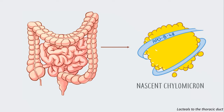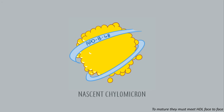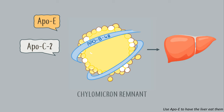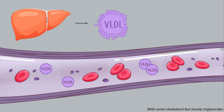Nascent chylomicrons leave the gut, lacteals to the thoracic duct. With MTP and ApoB48, to mature they must meet HDL face to face. HDL lends them some useful receptors. ApoC2 activating the lipase. The remnants depleted, their journey completed. Use ApoE to have the liver eat them.